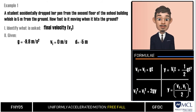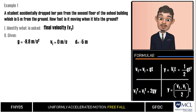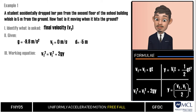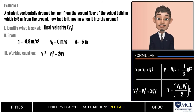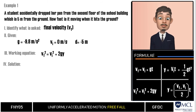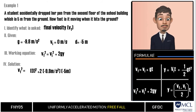Now that we have the givens, look at the list of formulas in the bottom right of this video. The most appropriate formula to use is vf squared equals vi squared plus 2gy. To solve this, we substitute the values: final velocity squared equals zero squared plus 2 multiplied by negative 9.8 meters per second squared.